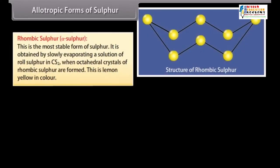Allotropic forms of sulphur. Rhombic sulphur. This is the most stable form of sulphur. It is obtained by slowly evaporating a solution of roll sulphur in CS2 when octahedral crystals of rhombic sulphur are formed. This is lemon yellow in colour.